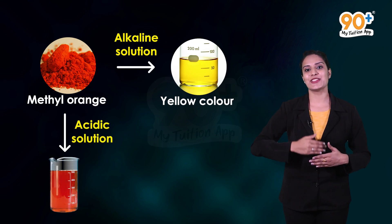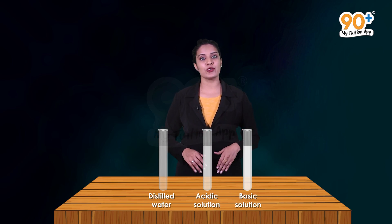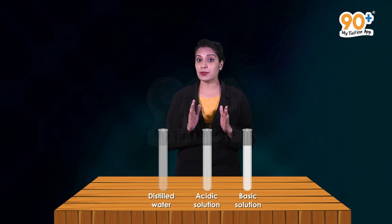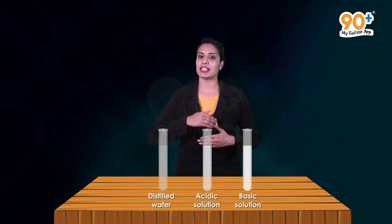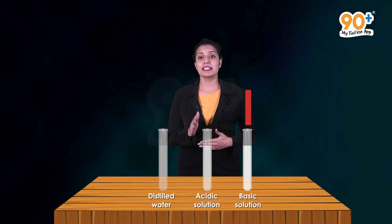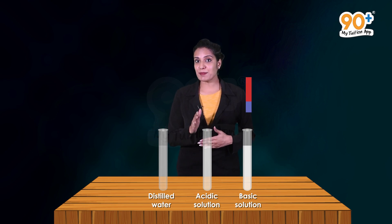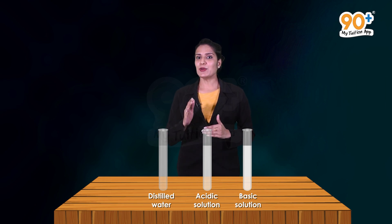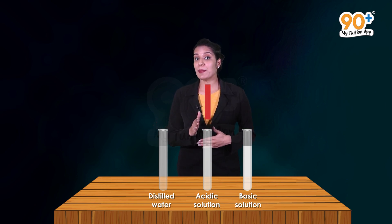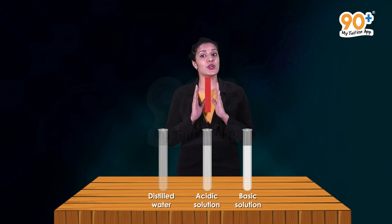Similarly, methyl orange has a yellow color with alkaline solutions and immediately turns red with acidic solutions. Now let's discuss a question: you have been provided with three test tubes — one contains distilled water, and the other two contain an acidic solution and a basic solution respectively. If you are given only red litmus paper, how will you identify the contents of each test tube? Let's take red litmus paper and dip it in the test tube containing the basic solution — the red litmus paper changes to blue. Now dip another red litmus paper in the acidic solution — no color change is observed.